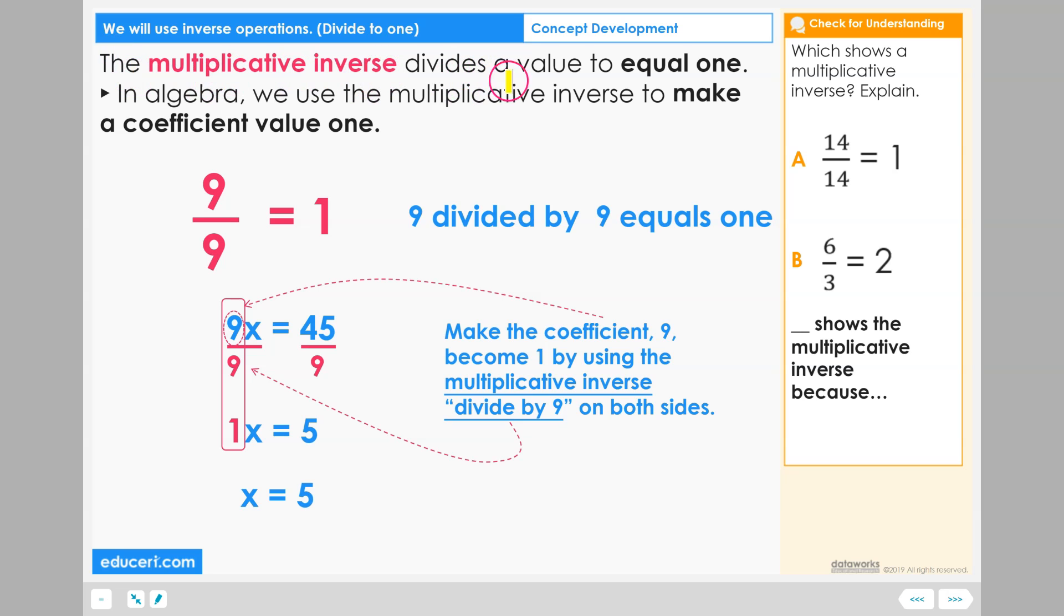The multiplicative inverse divides a value to equal one. The multiplicative inverse wants to use a value it will divide to get to one. So we have to think about this first value, nine, as a value that we have.